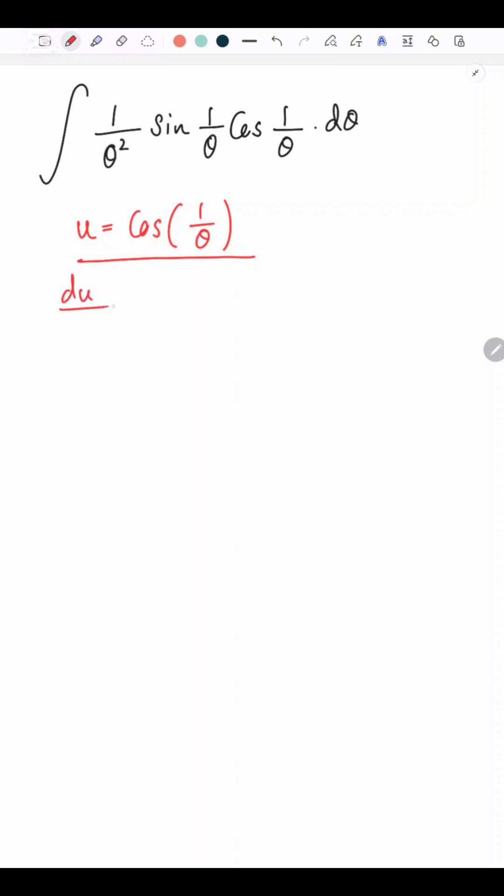So let's differentiate that. du over d theta equals minus sine 1 over theta times the differentiation of what you have inside the brackets.